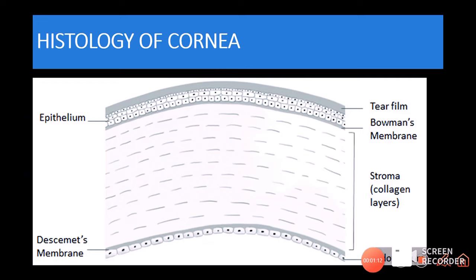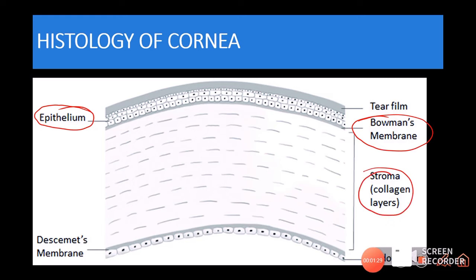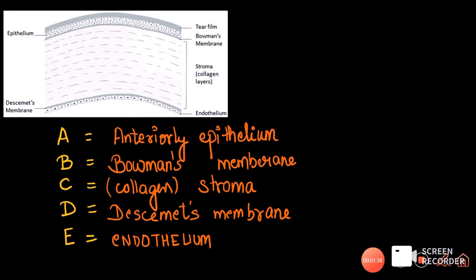Now let us talk about the histology of the cornea — the layers of the cornea. They are: the epithelium, Bowman's membrane, the stroma (the collagen layer), Descemet's membrane, and the endothelium. These layers can be remembered with the mnemonic A, B, C, D, E — A for epithelium anteriorly, B for Bowman's membrane, C for collagen in the stroma, D for Descemet's membrane, and E for endothelium.